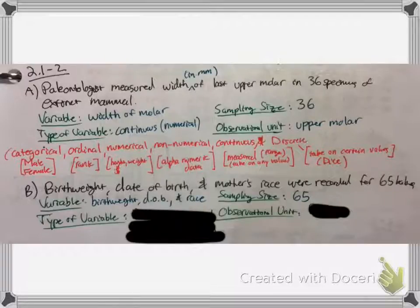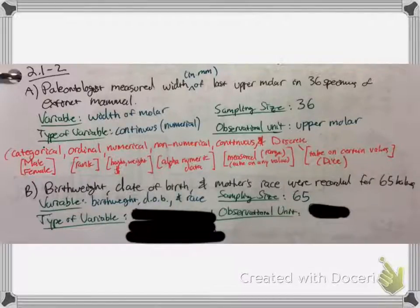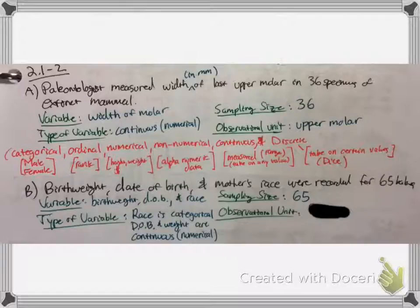The type of variable? This one's kind of interesting. Race would fall under categorical, kind of like male or female — you could have black, white, native, Latino, Asian, whatever. And then weight would be a numerical value, and also date of birth too, so those would be numerical or continuous. Just think about it: what changes? What's measured by numbers, and what's measured by category? And finally, what is the unit? What is being measured? The babies.